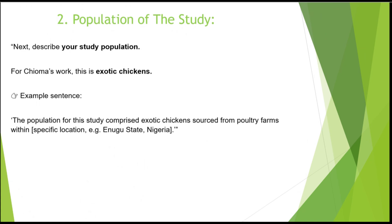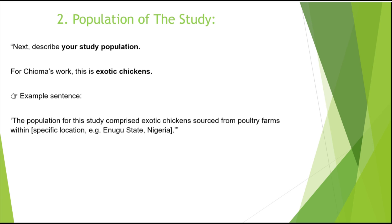For this particular topic, when describing the population of the study for exotic chickens, we are going to say: 'The population of the study comprised exotic chickens sourced from poultry farms within' — and then you provide a specific location. For example, assuming a location in Enugu State called Akka West, we say: 'within Akka West, Enugu State, Nigeria.' You can also decide to attach a specific number as your population.